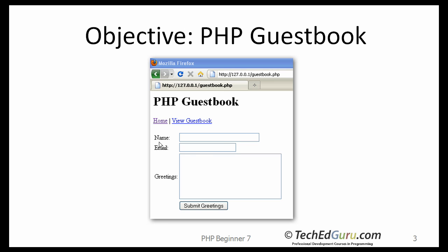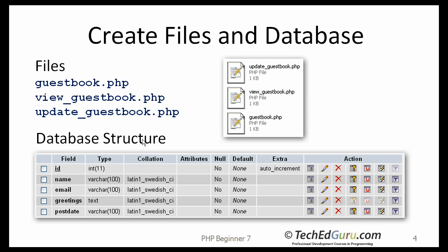So this is our goal — this is what we will be creating. You will be creating three files: one called guestbook.php, which is the main file that will display the form. There is also one called update_guestbook — when the user clicks on the update button, this is the PHP file that is run. View_guestbook is used to view the entries currently in the guestbook database. When the user provides information, we are going to store that in a database.